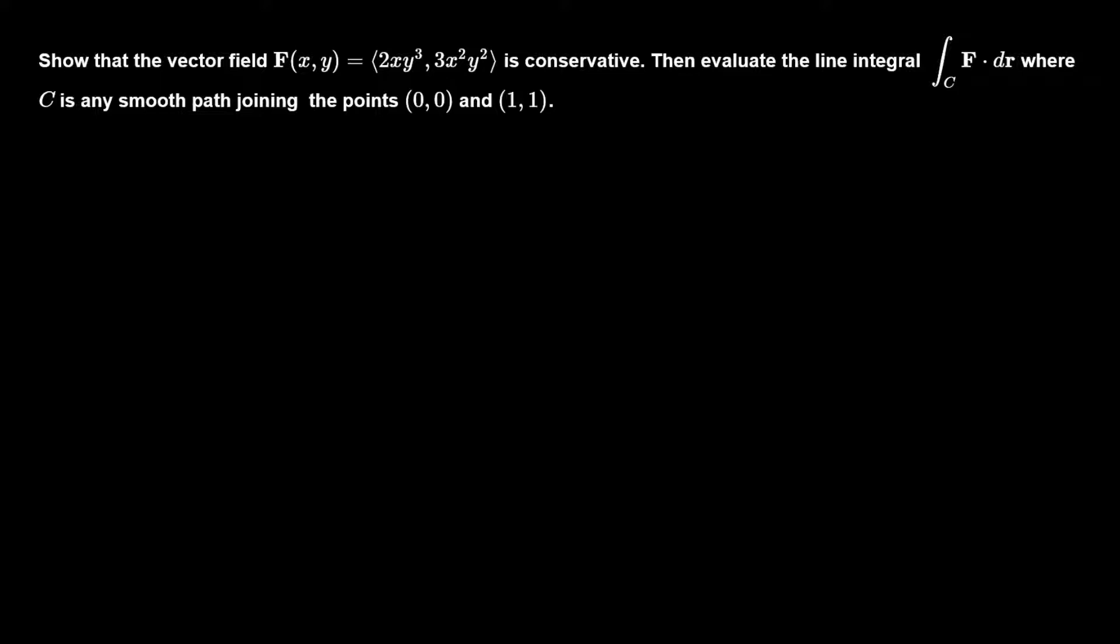Show that the vector field is conservative, then evaluate the line integral where C is any smooth path joining the points (0,0) and (1,1).